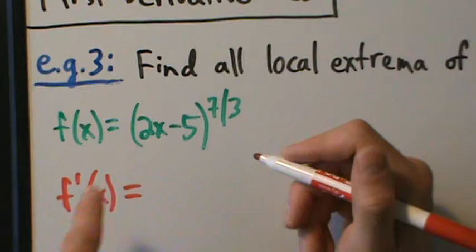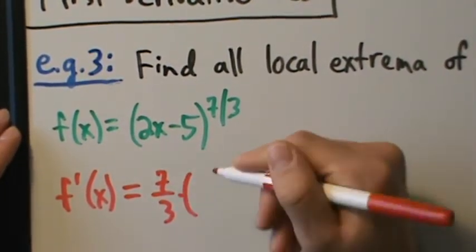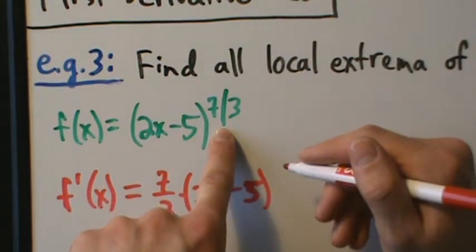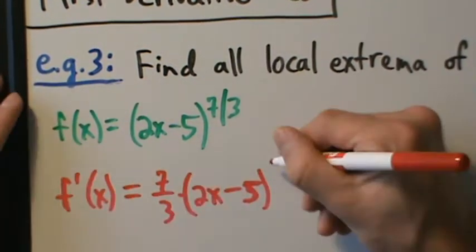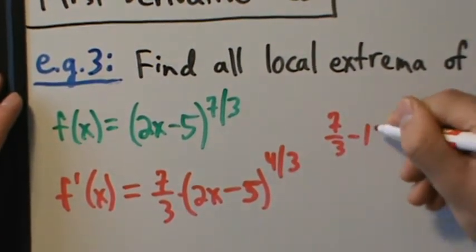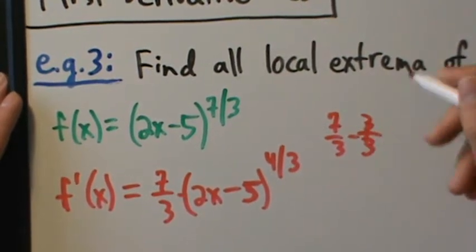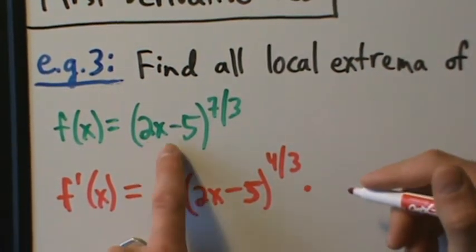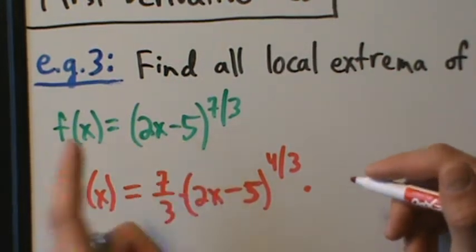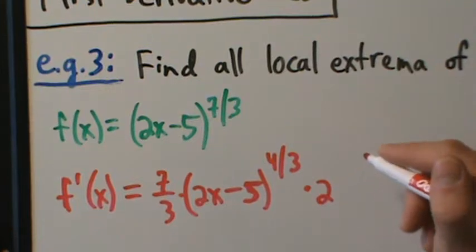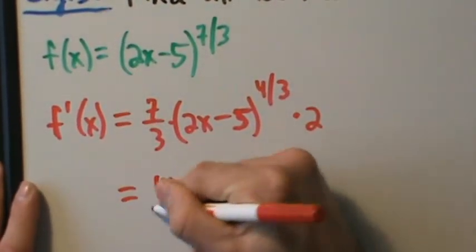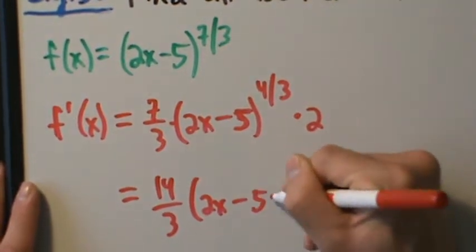The derivative: bring down the exponent, so it's 7/3 times the quantity (2x minus 5). The exponent gets reduced by 1: 7/3 minus 1 equals 7/3 minus 3/3 which is 4/3. Then by chain rule, multiply by the derivative of the inner function (2x minus 5), which is just 2. So f'(x) = 14/3 times (2x minus 5) to the 4/3.